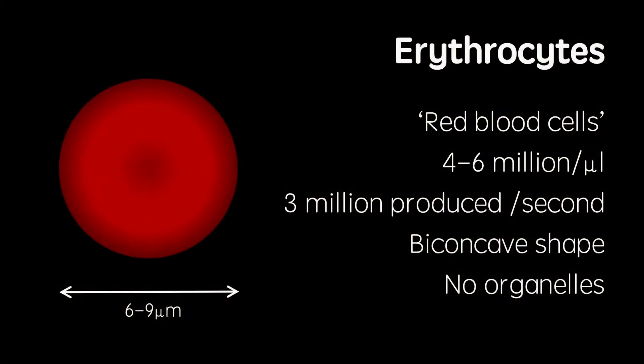Red blood cells are also known as erythrocytes. These cells are 6 to 9 micrometers wide and are responsible for transporting oxygen from the lungs to the rest of the body. There are 4 to 6 million erythrocytes per microliter of blood, and 3 million new cells are produced by bone marrow every second.